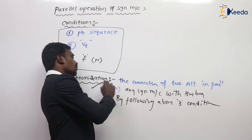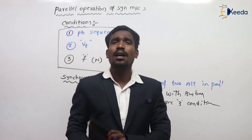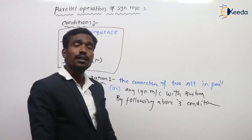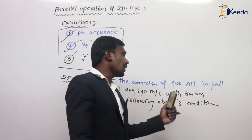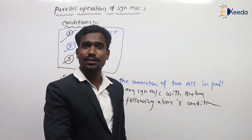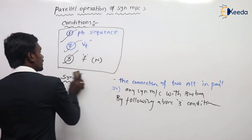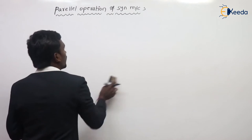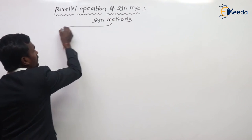This process — connection in parallel of two alternators, or one alternator with bus bar, or one synchronous motor with bus bar — by following the above three conditions is called synchronization. These are simply the conditions for parallel operation. Now, what are the synchronization methods for synchronous machines? Let's discuss.